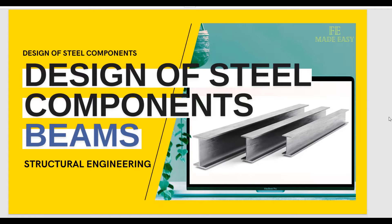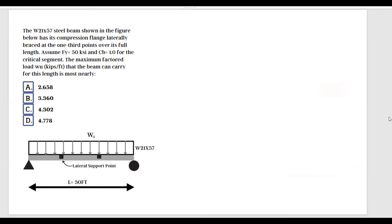Hi everybody, welcome back. Today we are going to talk about design of steel components, specifically about beams. The wide flange W21x57 steel beam shown in the figure has its compression flange laterally braced at the one-third points over its full length. Assume Fy equals 50 ksi and Cb equals 1 for the critical segment. The maximum factored load wu in kips per linear foot that the beam can carry is most nearly...